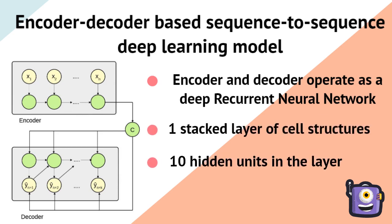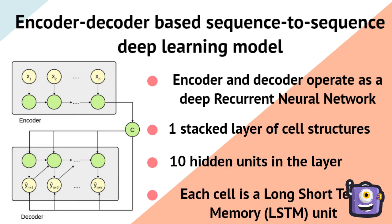The model consists of one stacked layer and 10 hidden units. Each cell in the RNN is a long short-term memory unit.